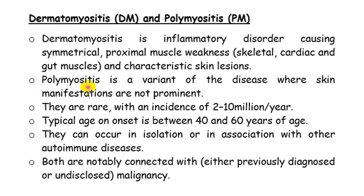In patients with polymyositis, it is part of the spectrum of dermatomyositis in which there will be no skin manifestation. So the same disease without skin manifestation we call polymyositis. Both are rare, with about 2 per 10 million per year. They usually occur in middle-aged patients, with a slight female predominance — female to male ratio about 2 to 1. The disease can occur as isolated or idiopathic, or may occur associated with other autoimmune diseases.